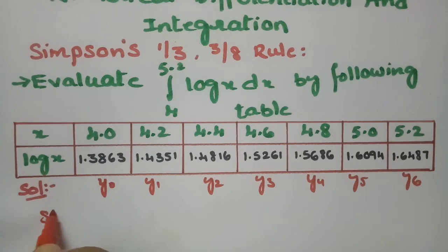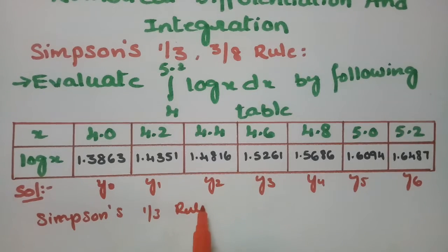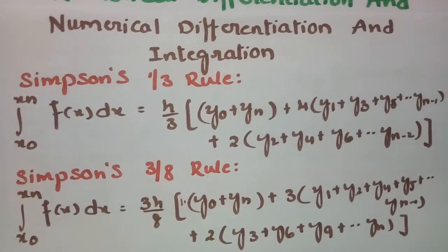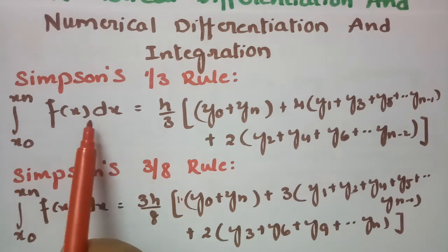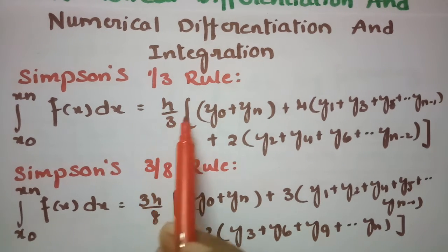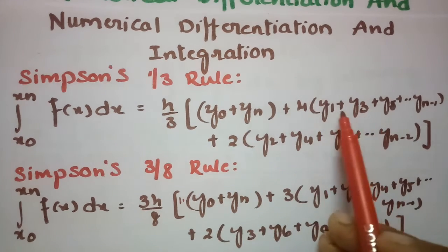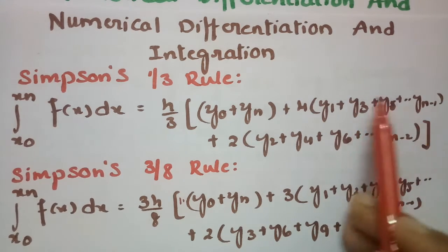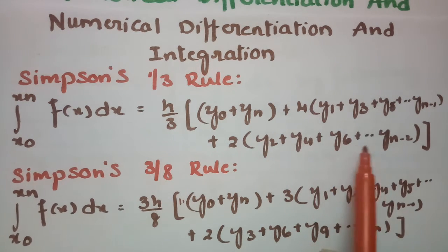According to Simpson's 1/3rd rule, the formula is: integral from x0 to xn of f(x) dx equals h/3 times [y0 + yn + 4 times all the odd ordinates y1, y3, y5, y7, y9, and so on, plus 2 times the even ordinates y2, y4, y6, and so on].